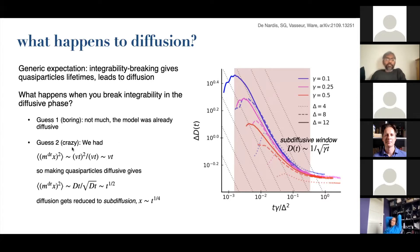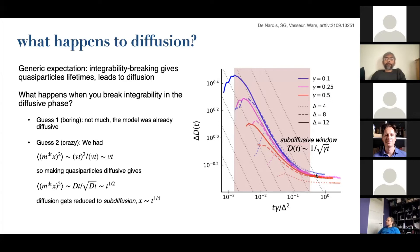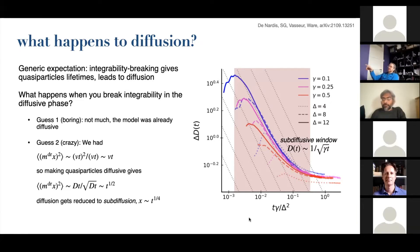Given that the model is already diffusive, what happens when you break integrability? There are two apparently contradictory answers. The boring answer says the model is already diffusive, so you'll just change the diffusion constant by a bit — like giving free fermions a mean free path. The second answer, based on the magnon picture, says the diffusion arises because of this cancellation between ballistic motion and approximate depolarization. If you give these magnons a mean free path, you immediately get sub-diffusion instead of diffusion. Numerically, you see a weird combination: sub-diffusion for a parametrically large time scale controlled by the anisotropy, but asymptotically diffusion — with a diffusion constant totally unrelated to the integrable case.